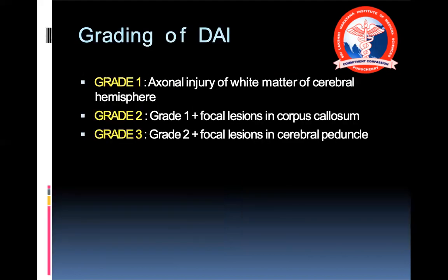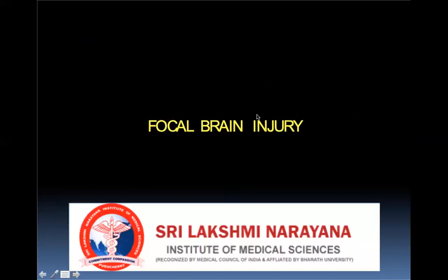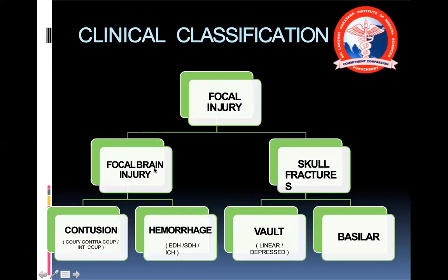DAI grading is Grades 1, 2, and 3 based on corpus callosum and cerebral peduncle involvement. Focal brain injury — the most important topic — can be either a contusion, a hemorrhage, or a skull fracture. We will start with contusion, then go on to hemorrhage, then fractures.